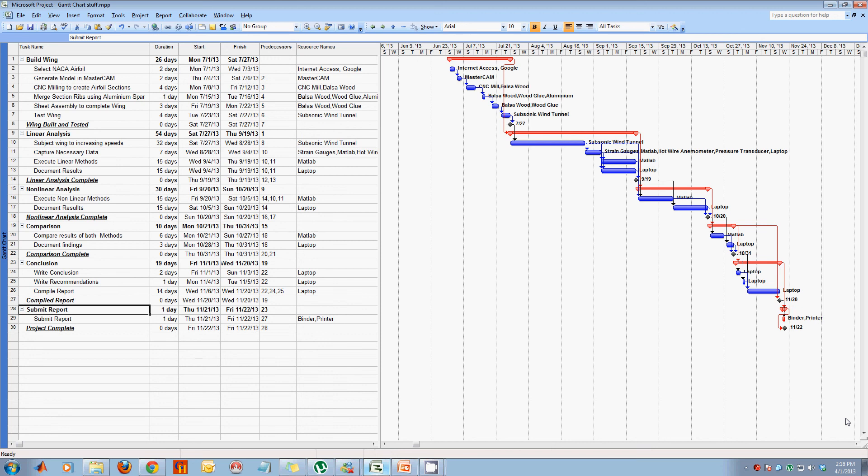The red bars represent the main task, the blue bars are the subtasks and the black diamonds are the milestones of the project. And you will notice that next to each subtask the resource requirements are also listed there.